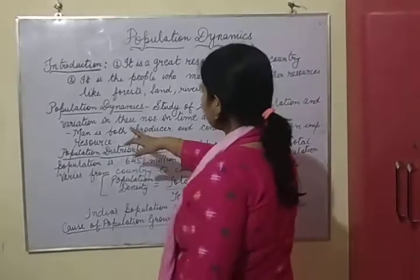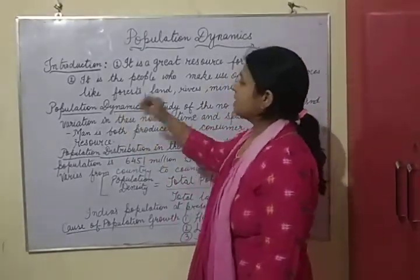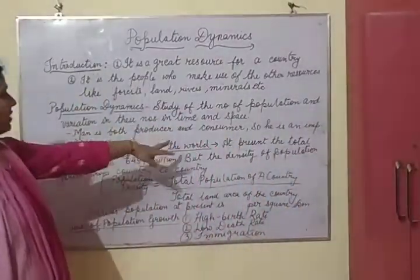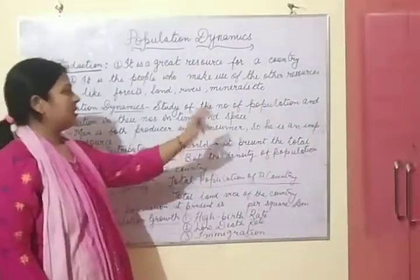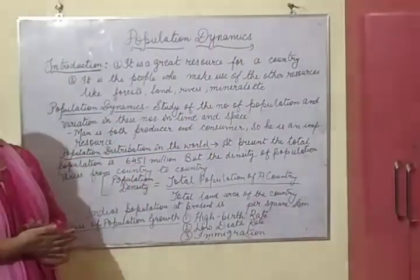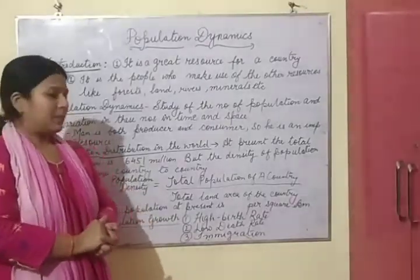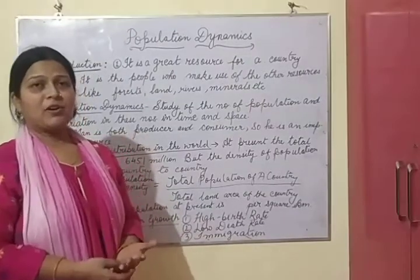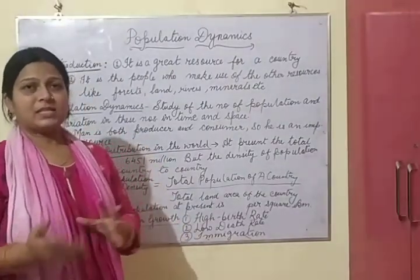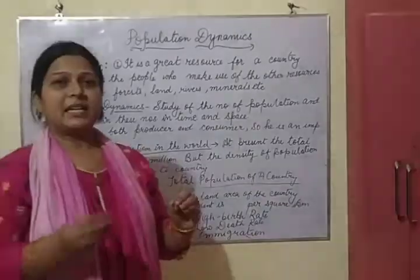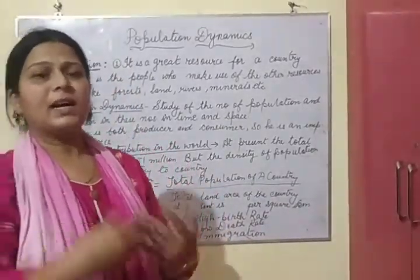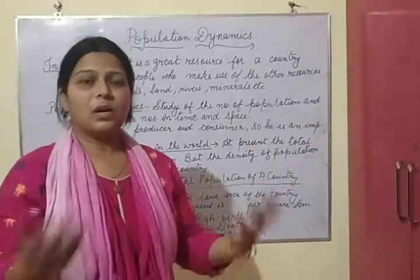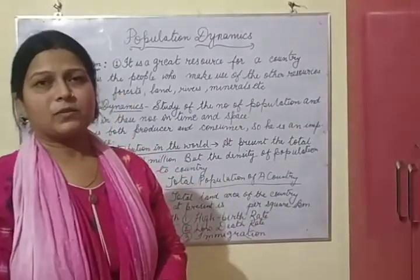Now we will see the definition of population dynamics. The study of the number of population and variation in these numbers in time and space is known as population dynamics. It refers to what is the rate of increase or decrease of population in a country — that is the population dynamics of a country or of the whole world.